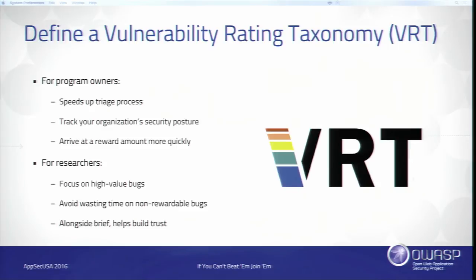You can publish the vulnerability rating taxonomy, and researchers will be very happy if you do because it's another level of setting expectations. Researchers will use it to decide what to focus on — what's going to be treated as a critical vulnerability for the top payout, and conversely what's going to be paid zero dollars. If you publish this, you'll find you get fewer reports that are zero-dollar accepted risks and more reports at higher severity because researchers will allocate their time there. Overall, this helps build trust, ensuring that in the giant sea of bug bounty programs that exist today, researchers keep coming back to yours.